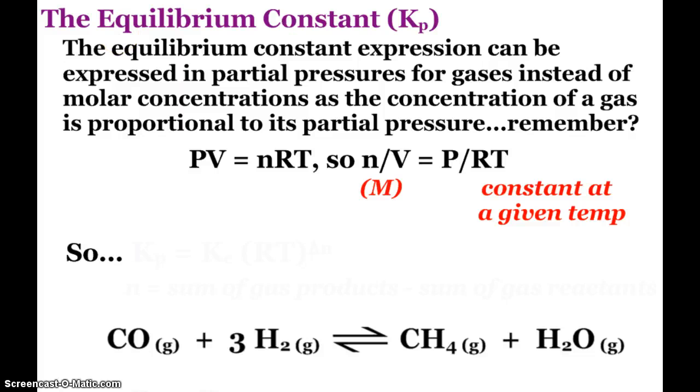Now, since we are talking about just gases, there is Kp, which is the equilibrium constant expression using partial pressures for gases instead of molarity. But that's not a big surprise, because when we talked about gases, the ideal gas law, PV equals nRT, if I rearrange that, n over V, moles per liter, is molarity,